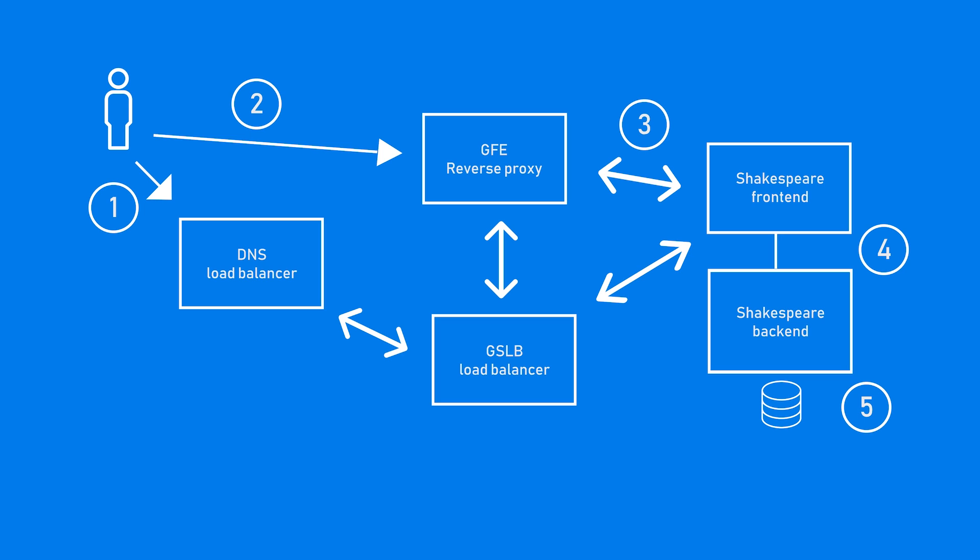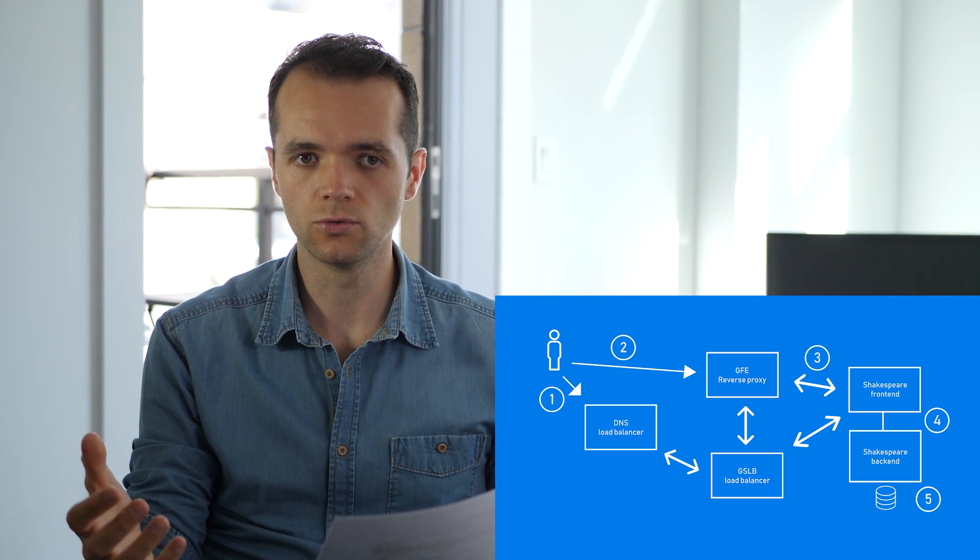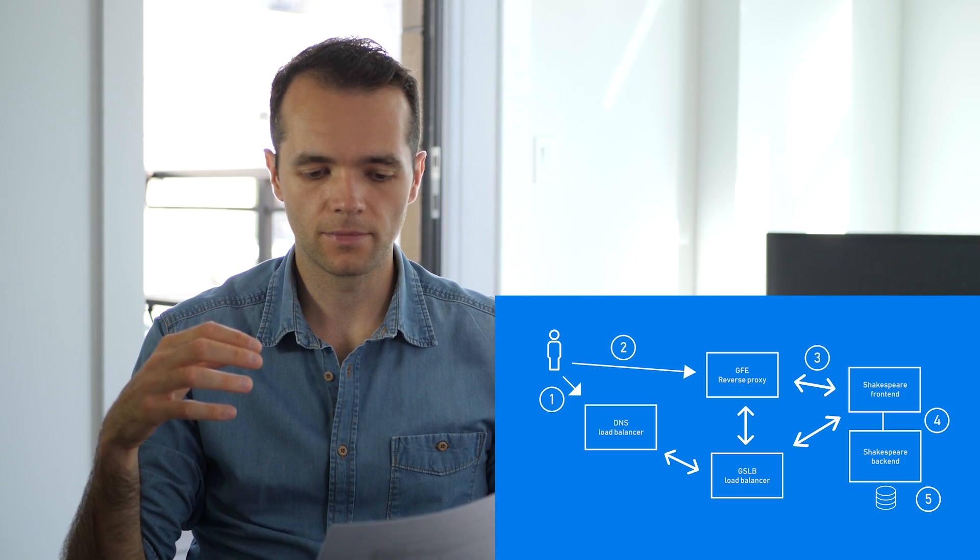GSLB routes the request to a GFE, which is a reverse proxy. The Google DNS server replies to the user with the IP address pointing to this reverse proxy. The GFE acts as the only frontend the user is communicating with — it takes the user's request, terminates the SSL connection, and unwraps the HTTP request. From this point further back in Google's infrastructure, it's no longer an SSL request; it may be converted to a remote procedure call (RPC).